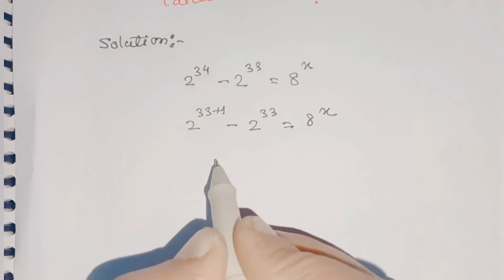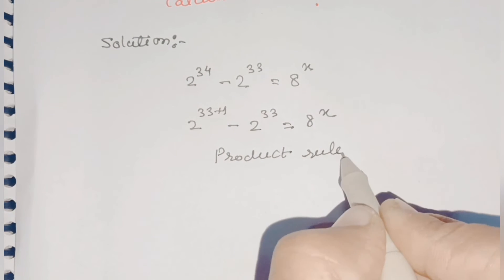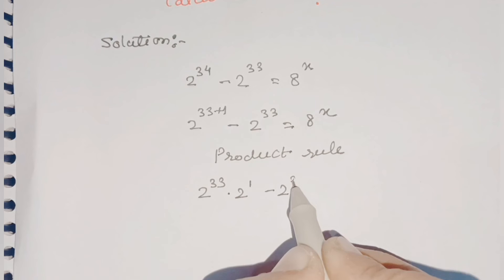In the next step we can apply the product rule: a raised to m plus n can be written as a raised to m into a raised to n. So we'll write 2 raised to 33 into 2 raised to 1 minus 2 raised to 33 is equal to 8 raised to x.